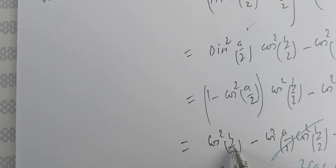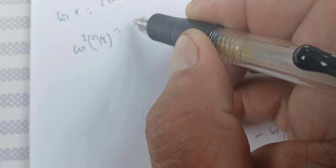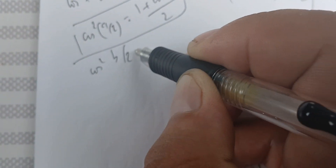Now we use the cosine double angle formula. We know cos(2x) = 2cos²(x) - 1, so cos(x) = 2cos²(x/2) - 1. Therefore cos²(a/2) = (1 + cos(a))/2 and cos²(b/2) = (1 + cos(b))/2.